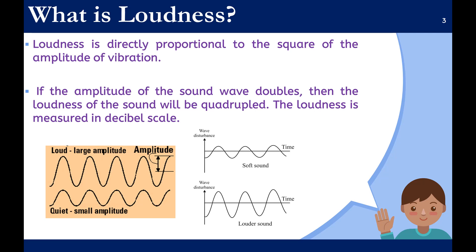Loudness is directly proportional to the square of the amplitude of vibration. If the amplitude of the sound wave doubles, then the loudness of the sound will be quadrupled. The loudness is measured in the decibel scale.